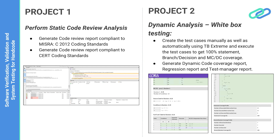In the Software Verification and Validation course, there are two projects using LDRA test suite. Students will upload a code base and perform static review analysis for MISRA 2012 coding standard, generate a code review report for CERT as well as MISRA C standard, make necessary modifications, fix the code, and achieve 100% MISRA C compliance. In project 2, students will perform dynamic analysis — white box testing — generating 100% coverage using TB Extreme to auto-generate test cases and reviewing the regression report using TB Test Manager.